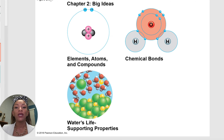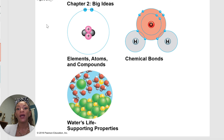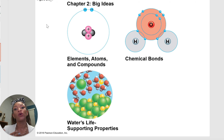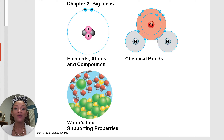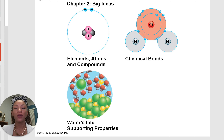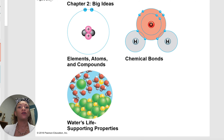Here are our big ideas for chapter two. We're going to go over atoms and the different things contained within atoms. We'll go over elements and compounds as well, the different types of chemical bonds, and then water's life-supporting properties — what is so special about water that helps to support life here on Earth?